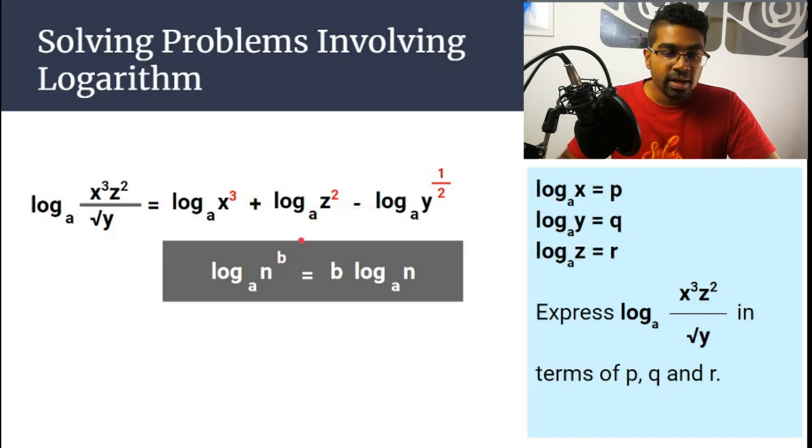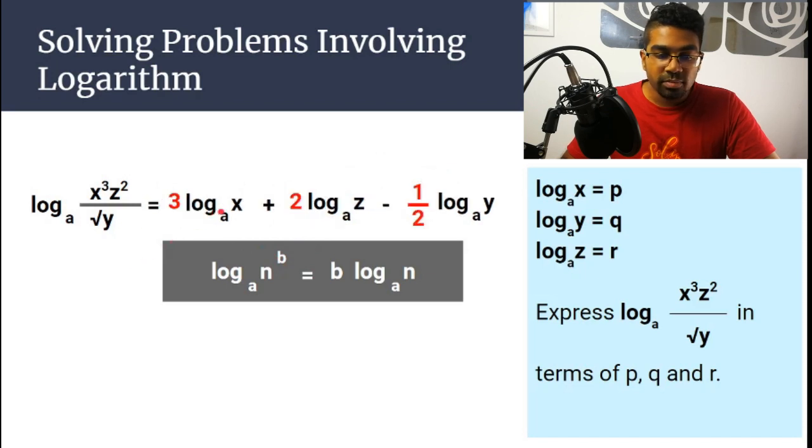These are the b's. And what we can do using this law, we can bring the numbers to the front. And so when we bring the numbers to the front, we get 3·log_a(x) + 2·log_a(z) - (1/2)·log_a(y). There's only one thing left to do.